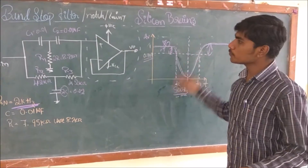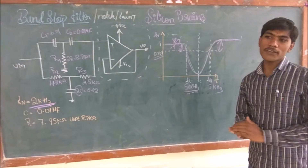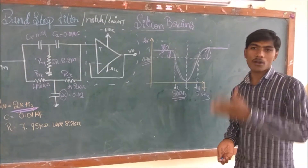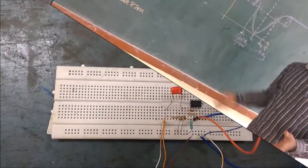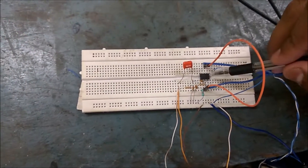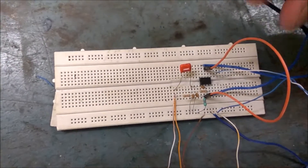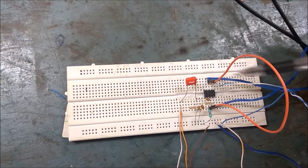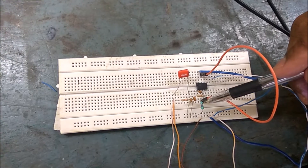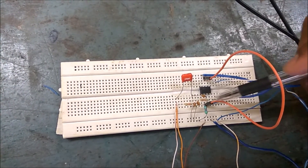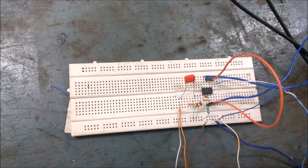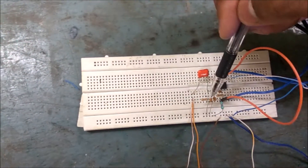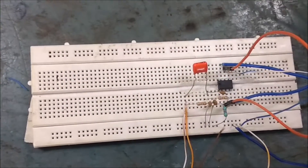We will see the band stop filter in a practical case and analyze a log graph to conclude. Coming back to the practical analysis: I've used the 741 op-amp in a voltage follower configuration — pin 2 is directly connected to the output. R1 is 4.7 kilo-ohm, and C2 is two times C1.